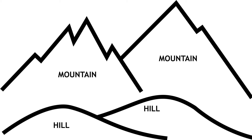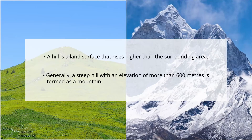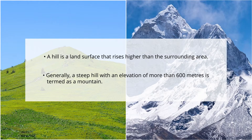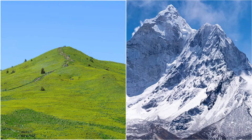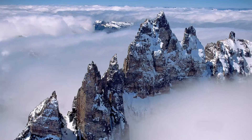Now let's talk about different landforms one by one. We'll start with mountains. A mountain is any natural elevation of the earth's surface. A hill is a land surface that rises higher than the surrounding area. Generally, a steep hill with an elevation of more than 600 meters is termed as a mountain.